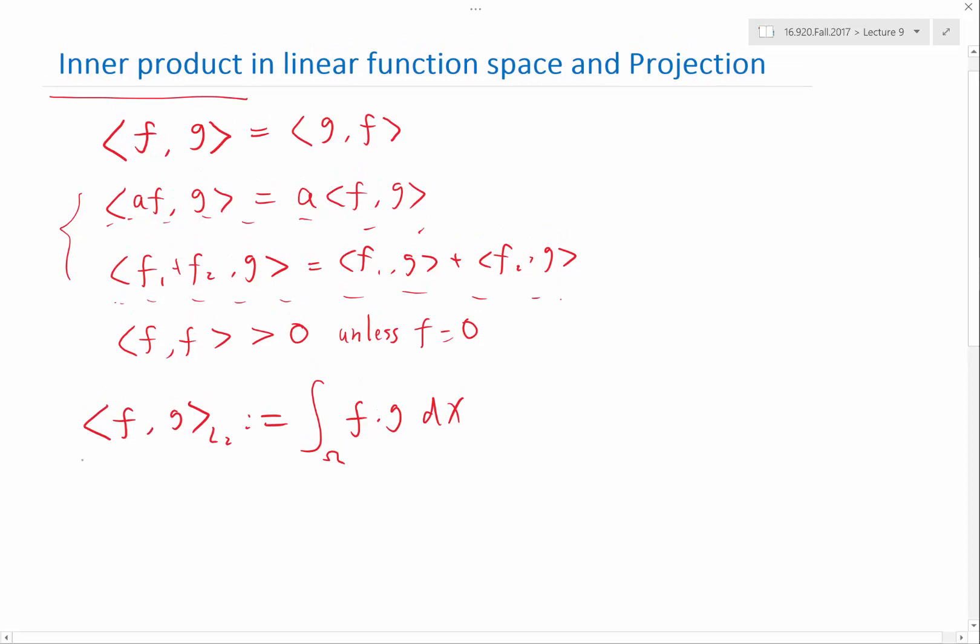So why is this notion of inner product going to give us a notion of how close is one function from the other? This is because of this property. The inner product of a function with itself, think of it as a generalization of the inner product of a vector with itself. It's actually a notion of how big that function is or how big that vector is. It actually gives us a norm. So if you take the square root of f inner product with f itself, it's actually a way of measuring the norm.